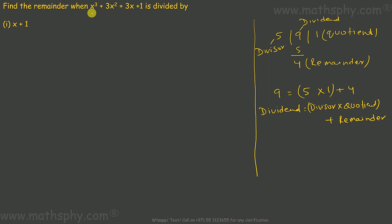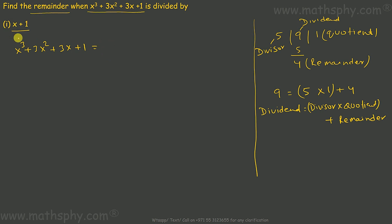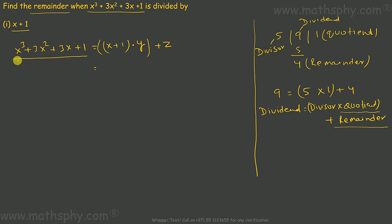Here, x³ + 3x² + 3x + 1 is divided by x + 1 — find the remainder. Putting this in that format: x³ + 3x² + 3x + 1 equals divisor (x + 1) into quotient y, plus remainder z. I do not know the quotient, I do not know the remainder.